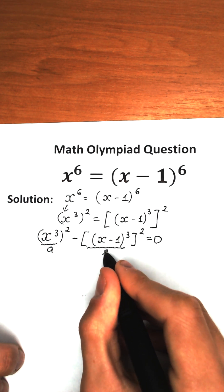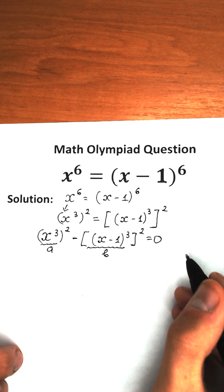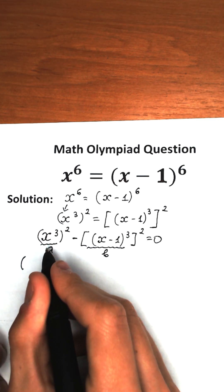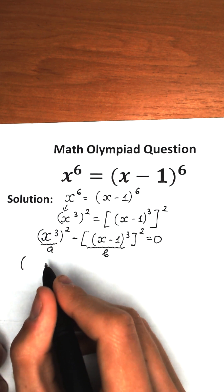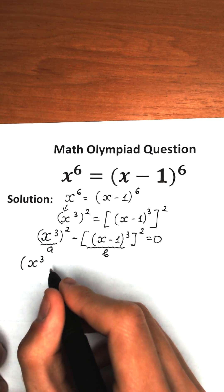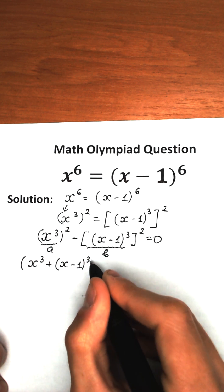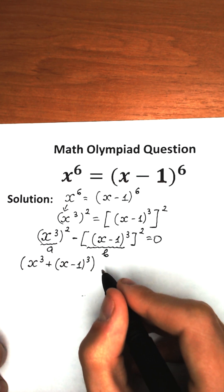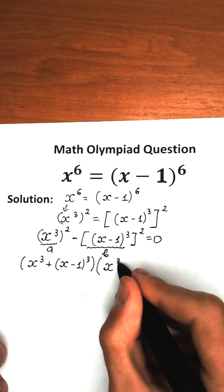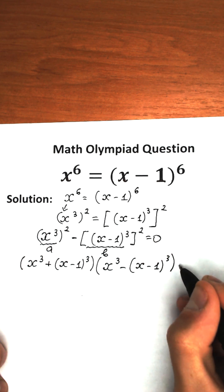We have the formula a squared minus b squared equals a plus b times a minus b. So applying this: in the first parenthesis we have x cubed plus x minus one cubed, and we multiply by the second parenthesis: x cubed minus x minus one cubed, all equal to zero.